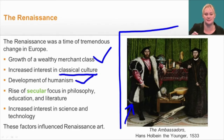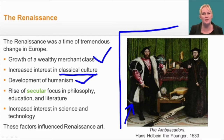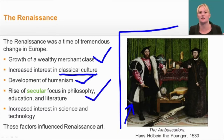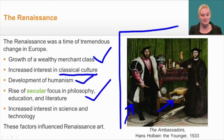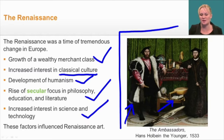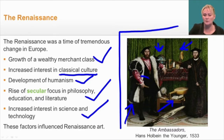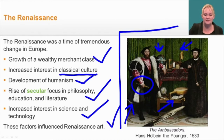There was the development of humanism. Notice that the two people pictured are regular gentlemen — not priests, not spiritual figures, not religious characters. There was a rise of secular, meaning non-religious, focus in philosophy, education, and literature. Notice the artist has put an open book into the portrait. There was also an increased interest in science and technology. In this portrait there's a globe, devices for measuring and collecting data, and the main person is holding a telescope — an instrument used for exploration and discovery. These factors influenced Renaissance art.